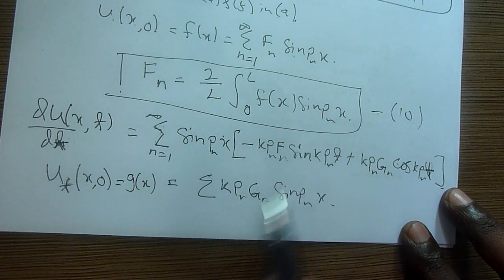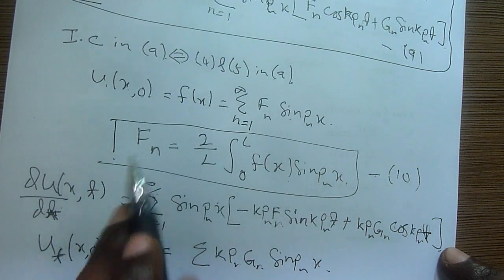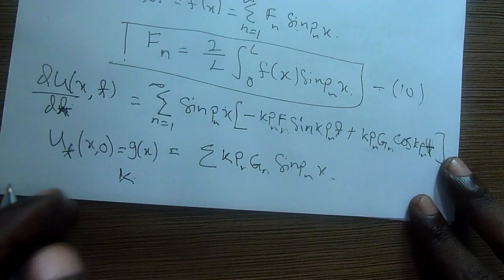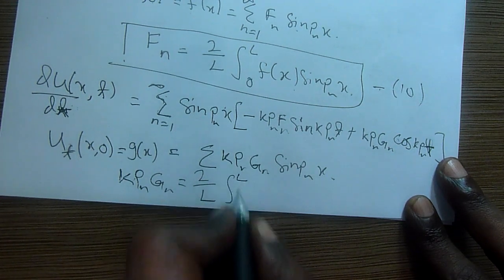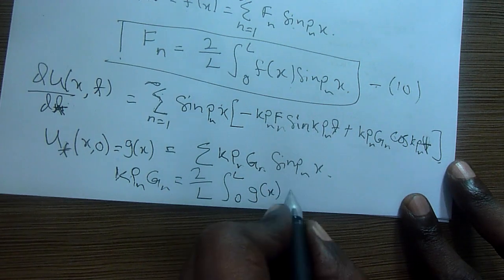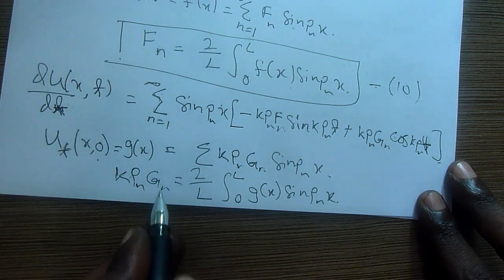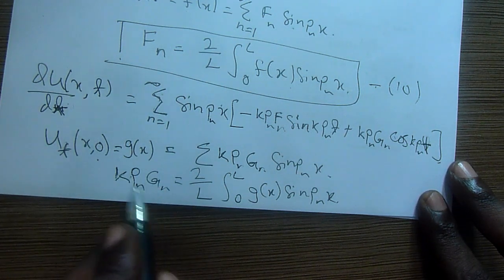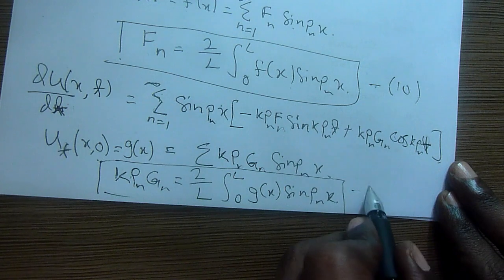To find g_n, use the same Fourier series method: k·p_n·g_n = (2/L)·integral from 0 to L of g(x)·sin(p_n·x)·dx. Then bring down k·p_n to isolate g_n. Call this equation 11. We have now completed the wave equation derivation — we have found all components: the general solution and the formulas for both f_n and g_n.